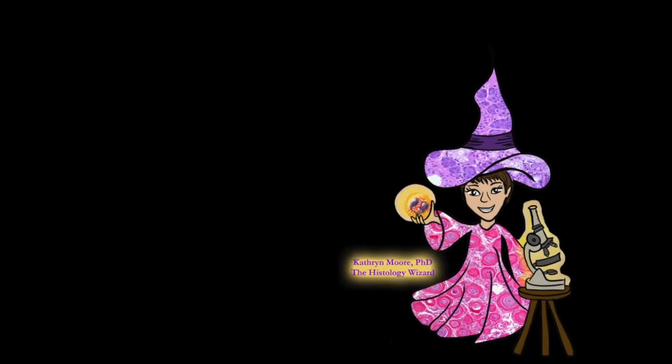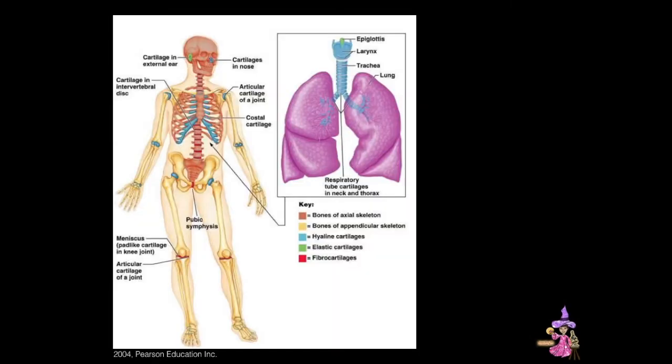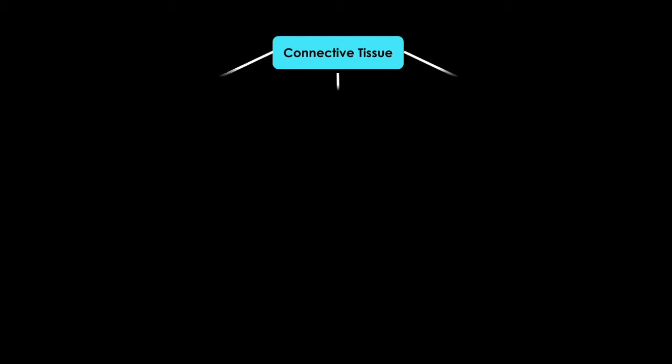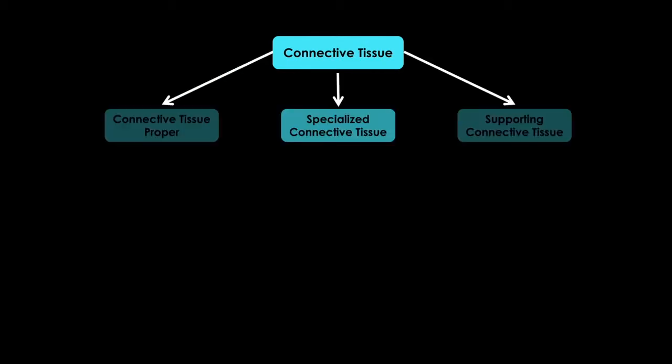In today's tutorial, we'll concentrate on cartilage, a type of connective tissue that is a critical structural component of the human body. Before we begin, let's step back and do a quick review of connective tissue. First, recall there are three major categories.